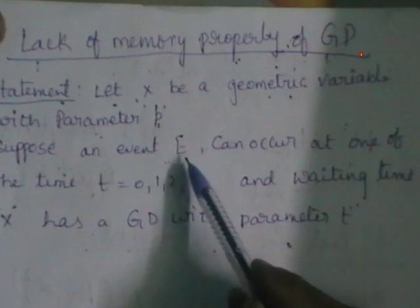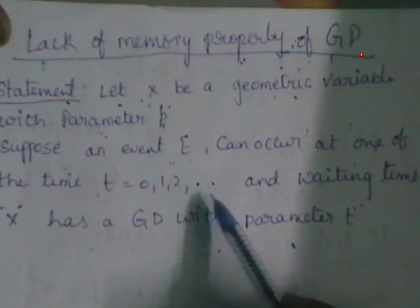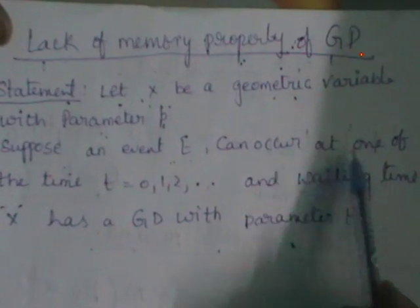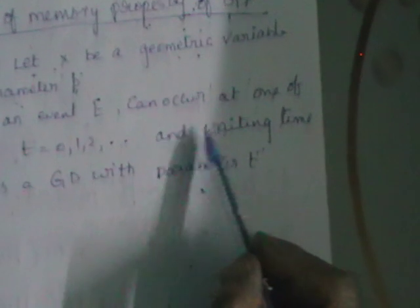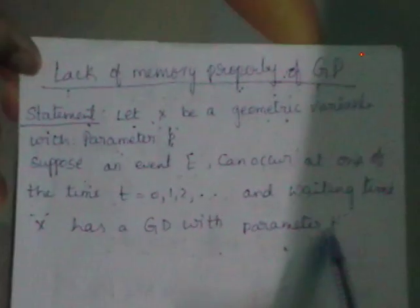If you consider an event E occurring at one of the times t = 0, 1, 2, 3, and so on to infinity, the waiting time x has a geometric distribution with parameter P. Here we are going to prove that the waiting time distribution is also a geometric distribution.